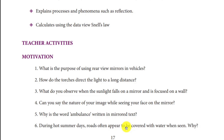During hot summer days, roads often appear to be covered with water when seen from a distance. This phenomenon is called Total Internal Reflection. The air near the ground is hotter and less dense. When light passes from cooler air to hotter air, it deviates from its path and creates a mirror-like effect.